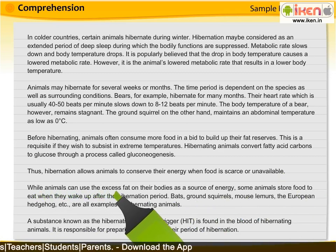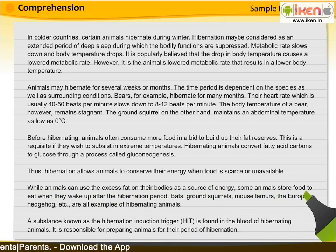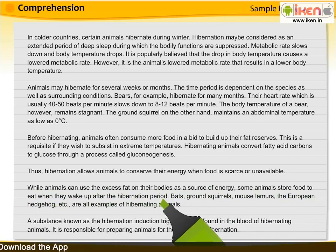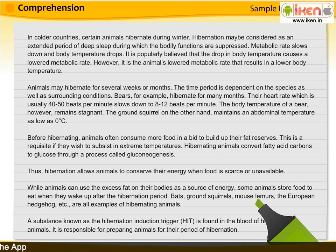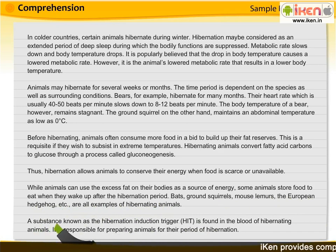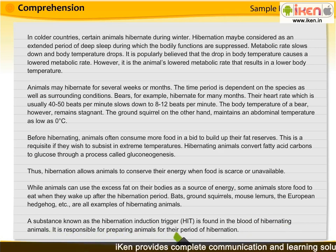While animals can use the excess fat on their bodies as a source of energy, some animals store food to eat when they wake up after the hibernation period. Bats, ground squirrels, mouse lemurs, the European hedgehog, etc. are all examples of hibernating animals. A substance known as the hibernation induction trigger, HIT, is found in the blood of hibernating animals. It is responsible for preparing animals for their period of hibernation.